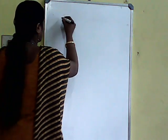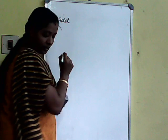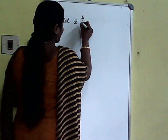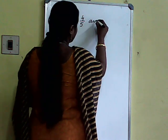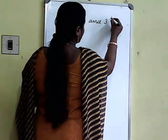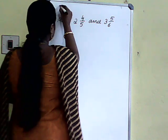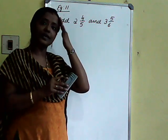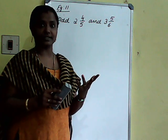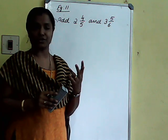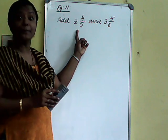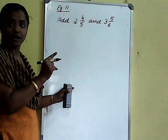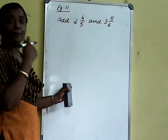So I will discuss: add 2 and 4 by 5, and 3 and 5 by 6. That is your example problem. These are mixed fractions. In previous modules we discussed how to solve like fractions — addition and subtraction. Here it is mixed fractions. In previous modules we also discussed how to convert a mixed fraction to an improper fraction.